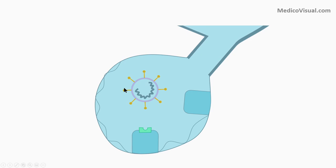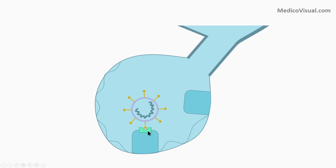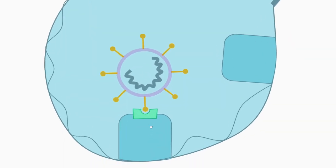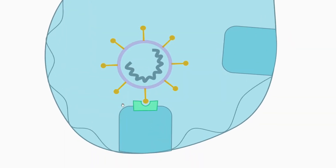As you know, the coronavirus enters into the cell through its spike protein. It attaches its spike protein to the ACE2 receptors, and if we block this step we can block the entry of this coronavirus into the cell and thus we can prevent the infection.